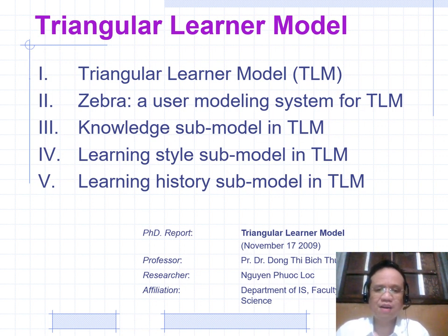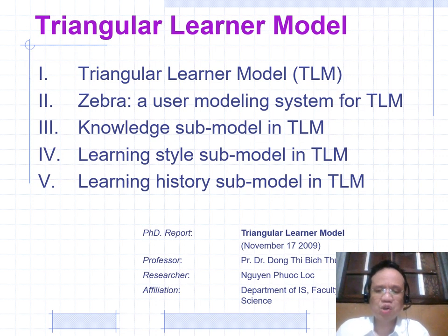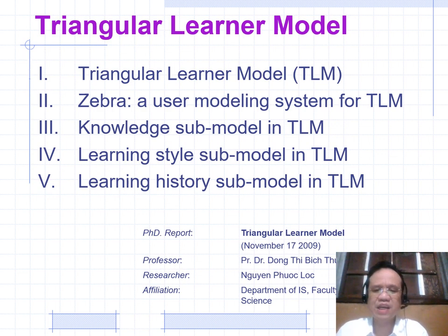There are five parts. Part 1: Triangular Learner Model (TLM). Part 2: Zero Azure Modeling for TLM. Part 3: Knowledge Submodel in TLM. Part 4: Learning Style Submodel in TLM. Part 5: Learning History Submodel in TLM.